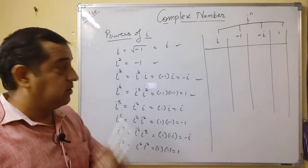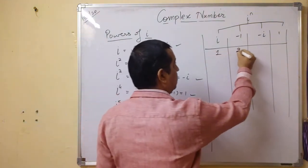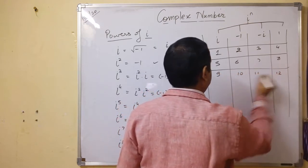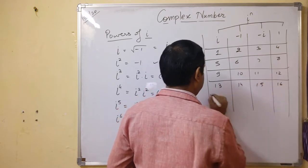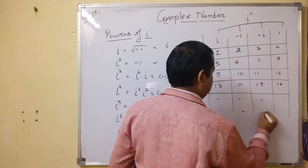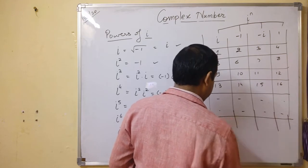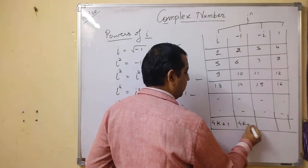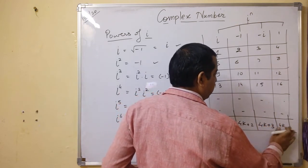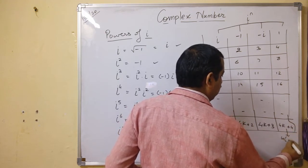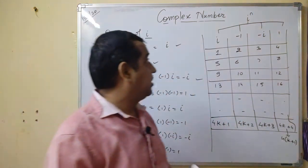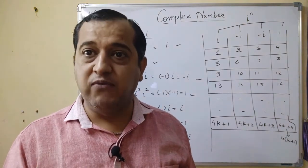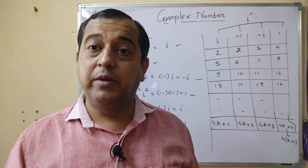i raised to n has only four values. For n equals 1, 2, 3, 4, 5, 6, 7, 8, 9, 10, 11, 12, 13, 14, 15, 16, one can say the values will follow the pattern 4k+1, 4k+2, 4k+3, 4k+4, which in short is 4k plus remainder.